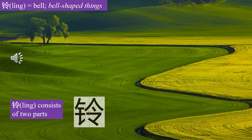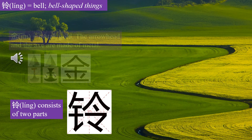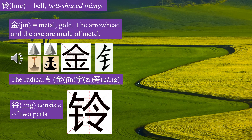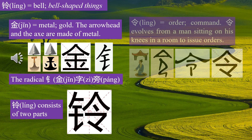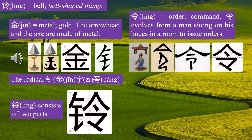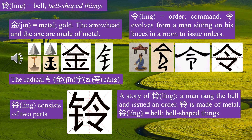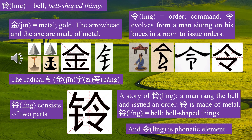Character Ling consists of two parts. Jin means metal; the radical Jin zi pang means metal. Ling means order, command. Ling evolves from a man sitting on his knees in a room to issue orders. A story of Ling: a man rang the bell and issued an order. Ling is made of metal. Ling means bell, bell-shaped things.